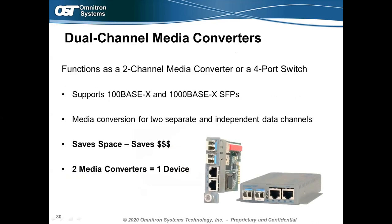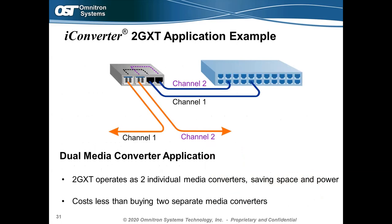Dual-channel media converters function as a two-channel converter or a small four-port mini copper-fiber switch. Omnitron's iConverter dual-channel media converters support both 100 Meg and Gigabit SFPs — so as bandwidth needs grow, you can swap SFPs on the fly. Two fiber ports connect two separate independent networks to one device, each with a corresponding copper port, saving space and the cost of buying multiple individual media converters.